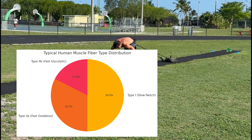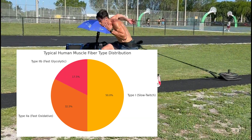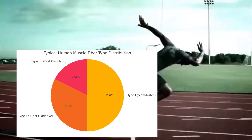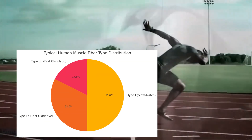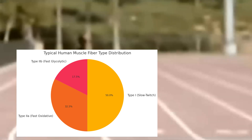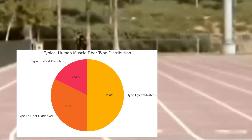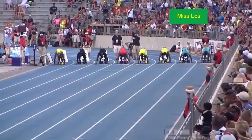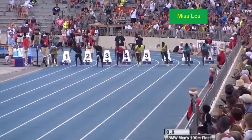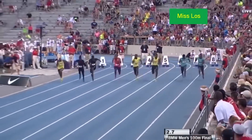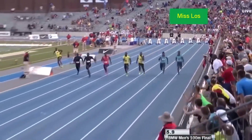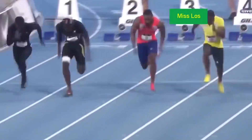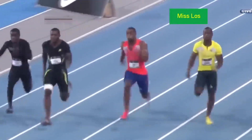Most people are born with an even balance of fast twitch and slow twitch muscle fibers — usually 45 to 55 percent slow twitch, 30 to 35 percent type 2a fast twitch, and 10 to 20 percent type 2b. While muscle fiber type is mostly genetic, environmental factors like training and nutrition can affect the behavior of type 1 muscle fibers to act more like fast twitch muscle fibers. Now that the foundation has been placed, let's talk about how we can use training to target these muscle fiber types to develop them.